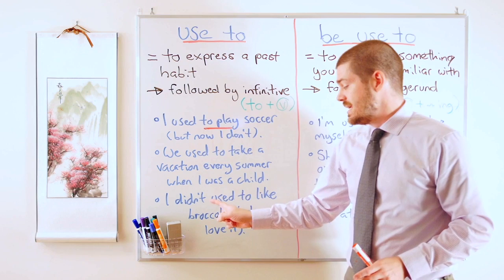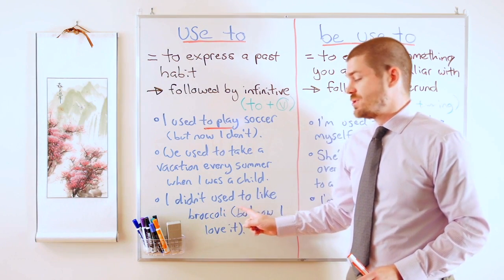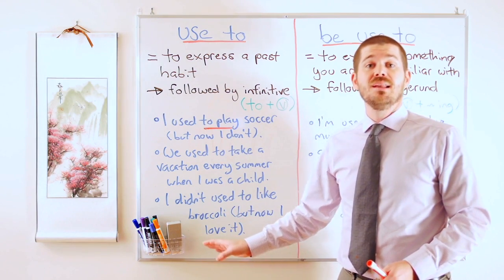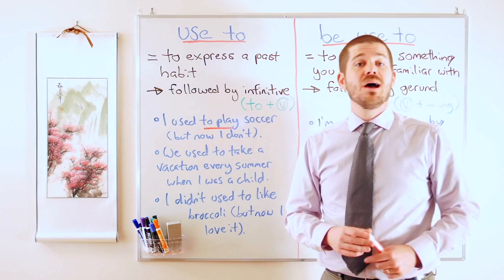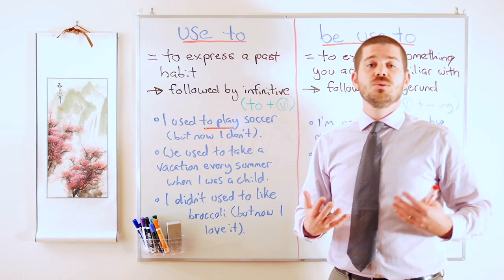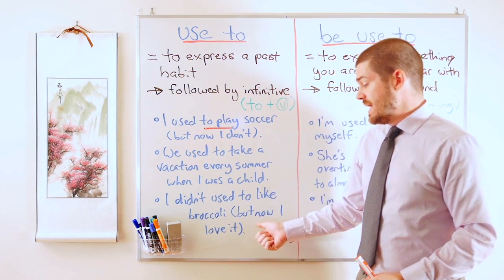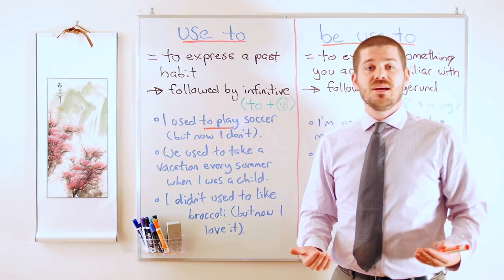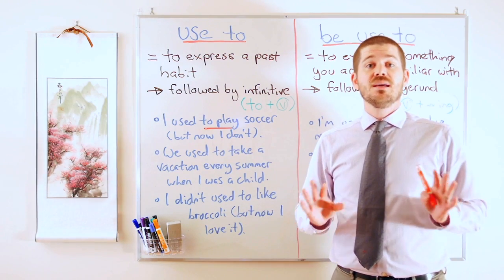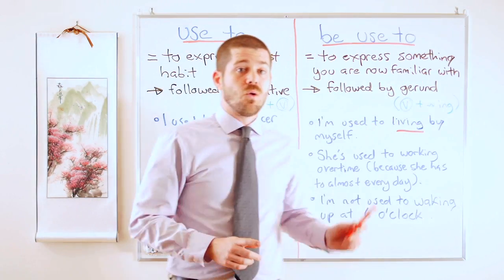One more example in the negative: 'I didn't used to like broccoli but now I love it.' This means I hated broccoli but now I don't. I could also say 'I didn't used to play sports when I was a child' or 'I didn't used to enjoy painting but now I do.' Note: 'but now I love it' is not necessary — saying 'I didn't used to like broccoli' already implies that now I do like it.